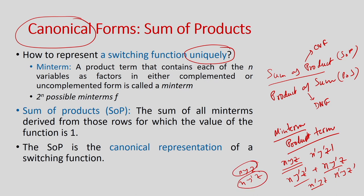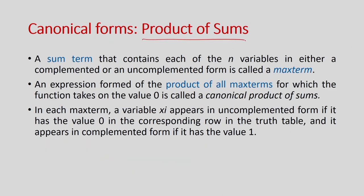This is one canonical representation, where I convert the function into minterms and represent it as a sum of product terms. Similarly, you can have Product of Sum, which is the opposite. Here the term is called a maxterm, and it is a sum term — for example x + y + z, x bar + y bar + z bar, x bar + y + z bar, and so on.